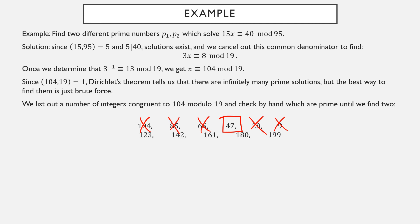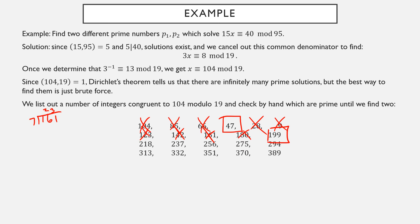So let's add 19 instead. 104 plus 19 is 123, divisible by 3. Plus 19 again is 142, which is even. 161 is not even, not divisible by 3 or 5, but it is divisible by 7. 180 is even. 199, however, is actually a prime number. So we have found two prime numbers equivalent to 104 modulo 19: 47 and 199. Dirichlet's theorem tells us there are infinitely many primes in this list, but we were only asked to find two.